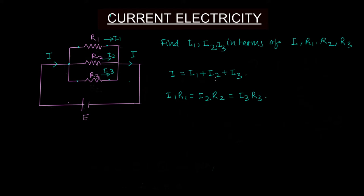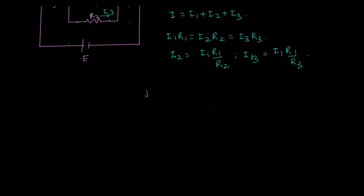If I want i1, I can express i2 and i3 in terms of i1. So i2 equals i1·r1/r2, and i3 equals i1·r1/r3. Substituting into the KCL equation: i equals i1 plus i1·r1/r2 plus i1·r1/r3.